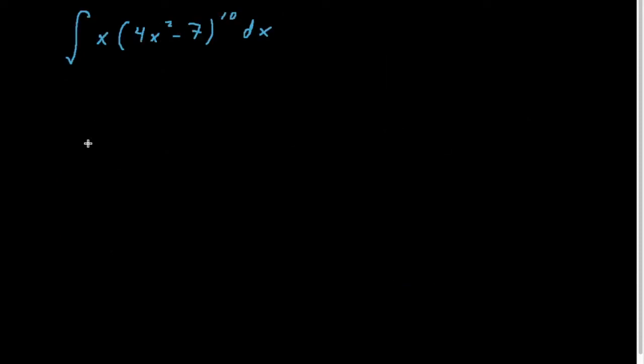Let's look at another example: x times (4x² - 7) to the 10th power with respect to x. We could simplify this out, multiply it out 10 times, then multiply times x. But that's just really time consuming. So we're going to use u-substitution instead.